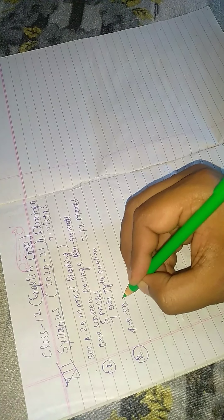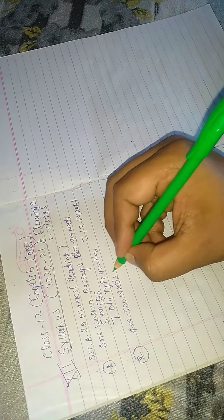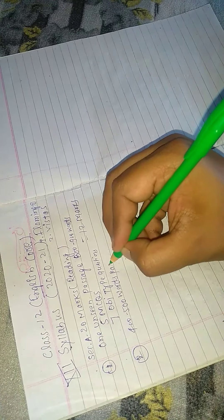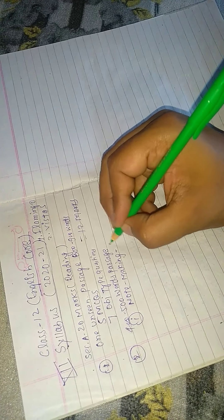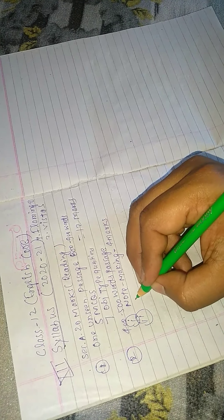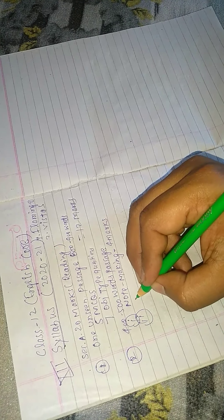Second question, it will be note making and summary writing. A passage will be there of 400 to 500 words for note making and summary writing. So note making will be 4 marks and summary writing is 4 marks. So 12 and 8 equals 20.